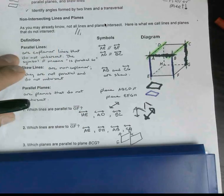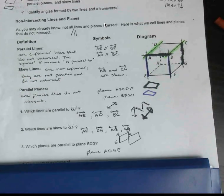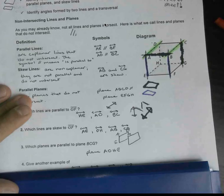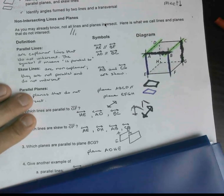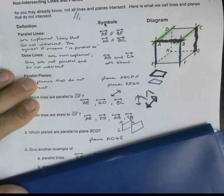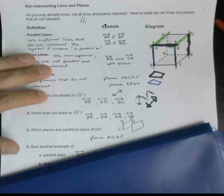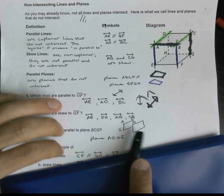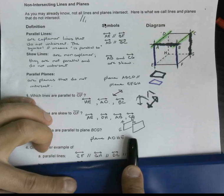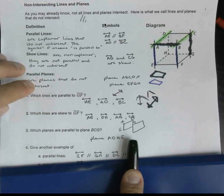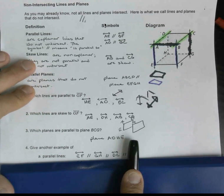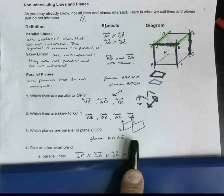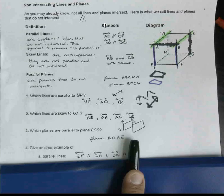Given another example of parallel lines, you have tons of options here for ones that run parallel. You could say that EF runs parallel to GH. What about another line that runs parallel to these? If it runs parallel to EF, GH, DC, it's going to have to be AB.